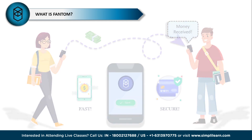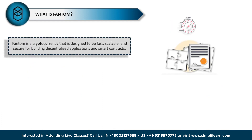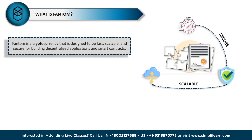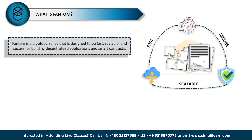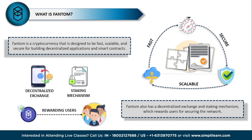Technically speaking, Fantom or FTM is a cryptocurrency that operates on its own blockchain platform. It aims to provide a fast, scalable, and secure infrastructure for decentralized applications and smart contracts. Fantom was designed to address common issues associated with blockchain platforms such as high transaction fees, slow transaction speeds, and limited scalability. It uses a technology called the Lachesis protocol, which enables faster consensus and allows for parallel processing of transactions.